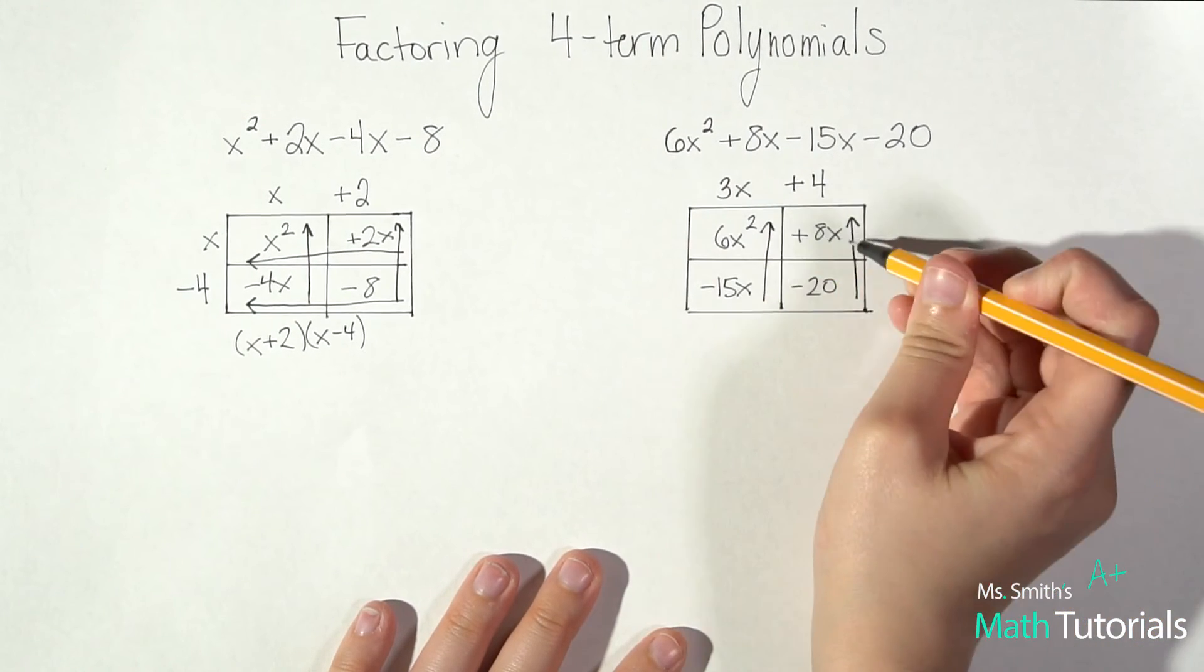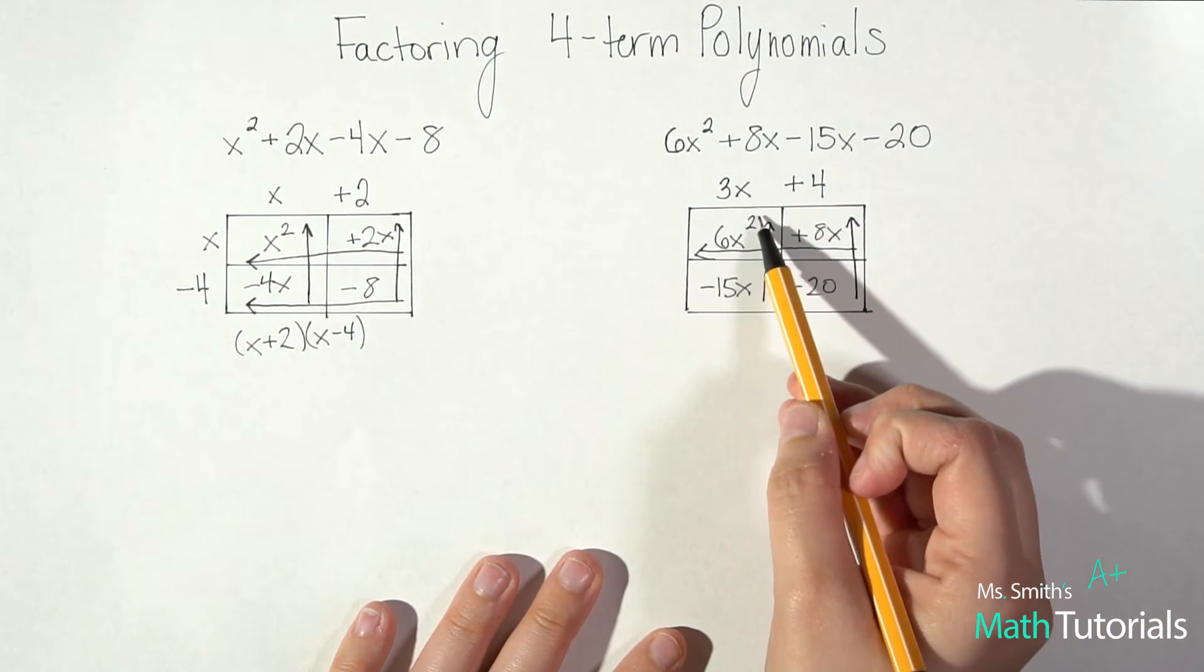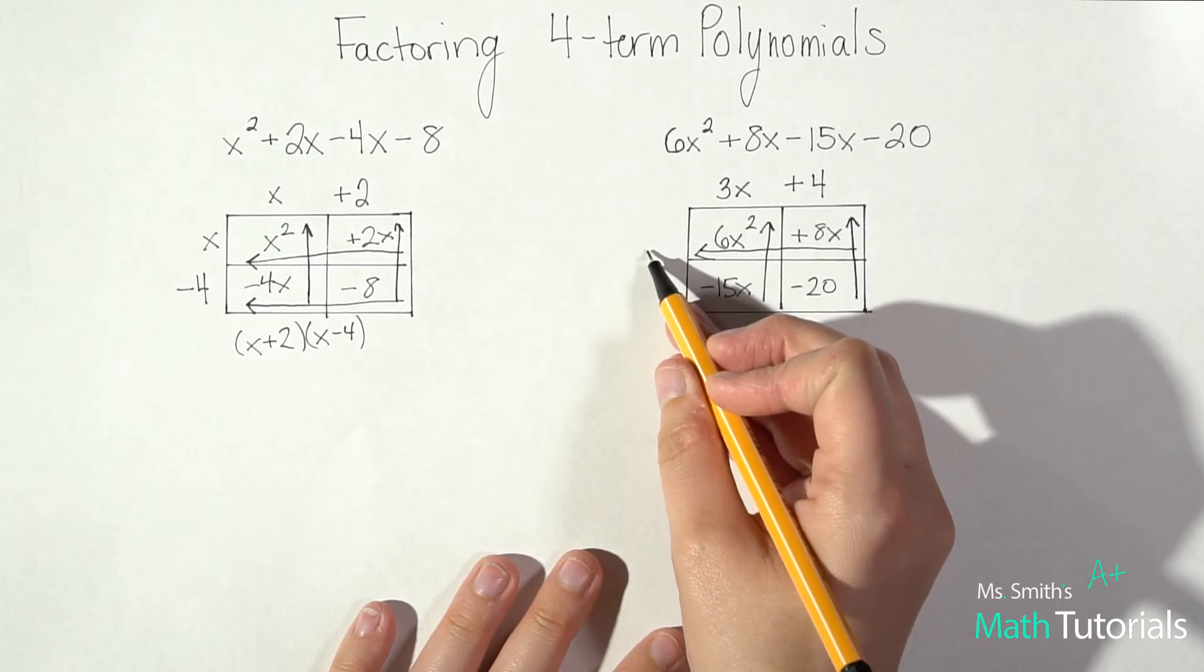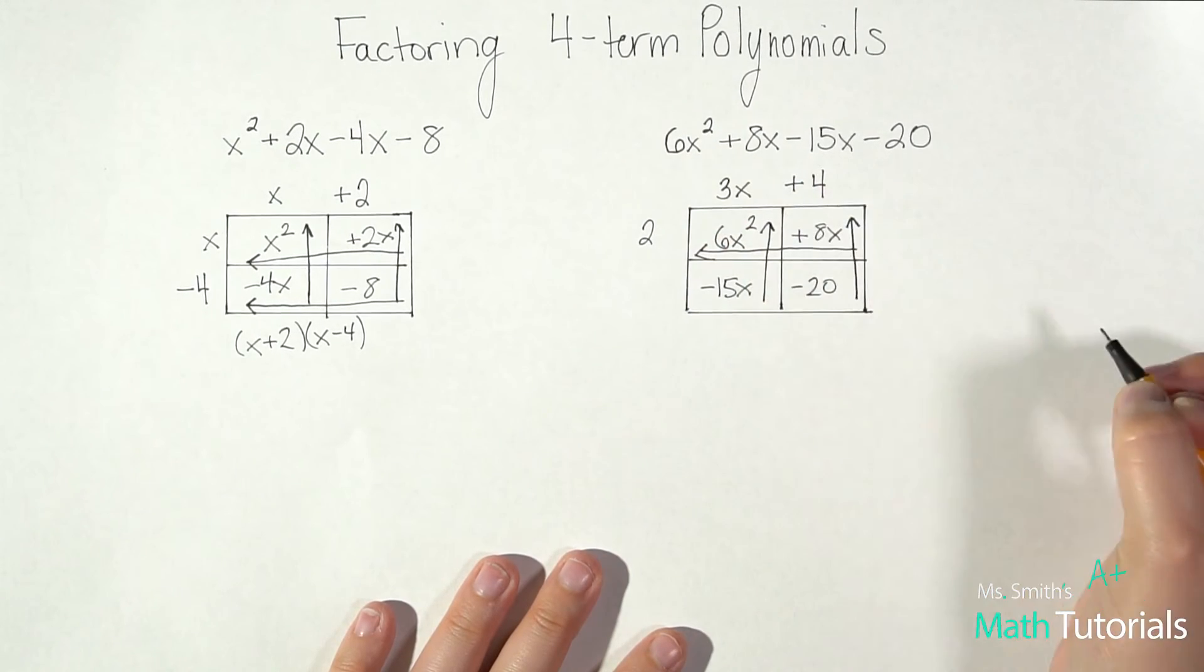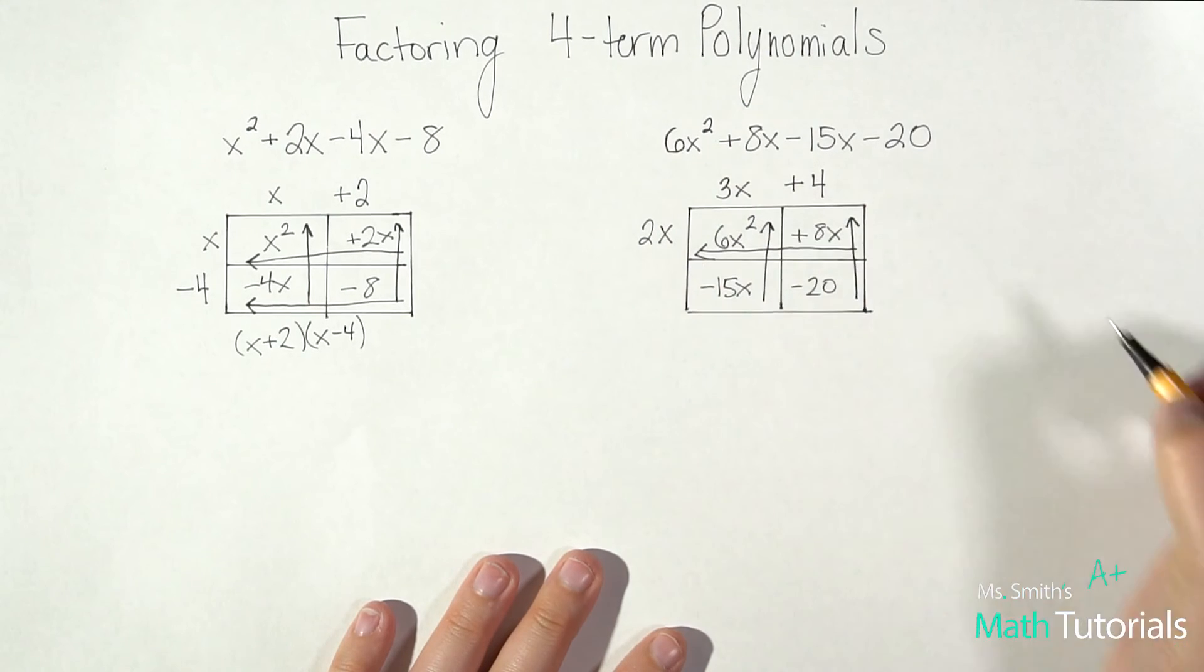So we're done with the top. Let's move side to side now. So between 6x squared and positive 8x, I know my sign is going to be positive. Between 8 and 6 I can pull out a 2. I've got an x squared and an x, so the most I can pull out would be an x.